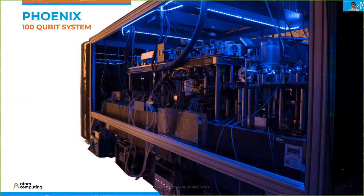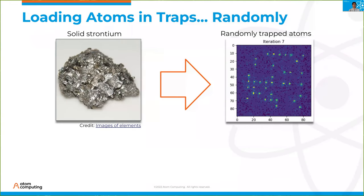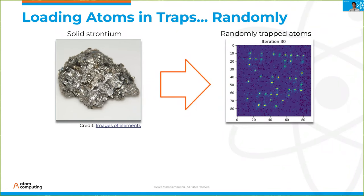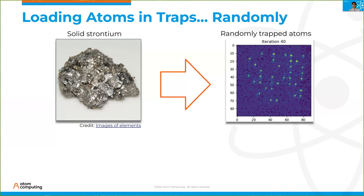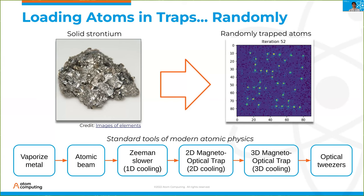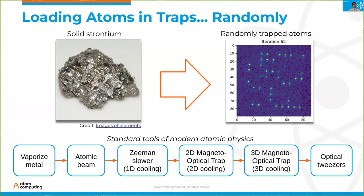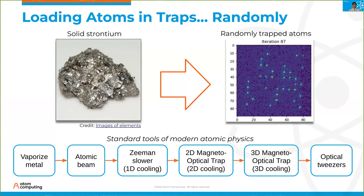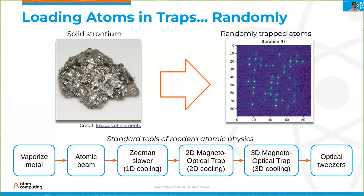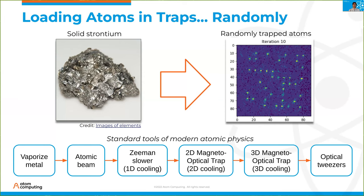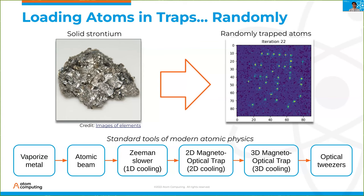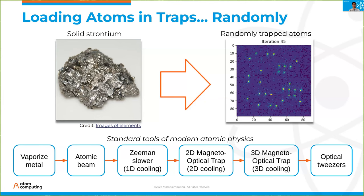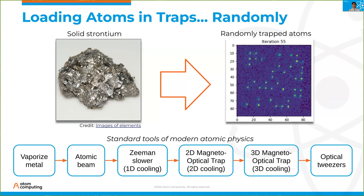This is what Phoenix looks like in our lab in Berkeley right now. The first thing it has to do is go from a chunk of solid strontium metal — something I can buy online — and turn it into a grid of individually trapped atoms. We put the chunk of metal inside a vacuum system and into an oven, getting the oven really hot to vaporize some of the strontium. We poke a hole in the oven so an atomic beam flies out. This fast-moving, very hot beam needs to be slowed down, so we send it through three stages of cooling using optical forces of light to slow the beam more and more, and in more spatial dimensions. After the third stage, we have a cold, dense cloud of atoms, which we overlap with our focused spots of light — optical tweezers — resulting in randomly loaded traps with individual atoms.